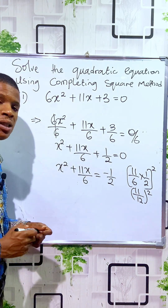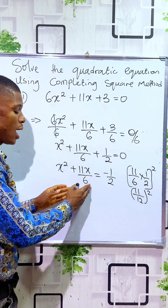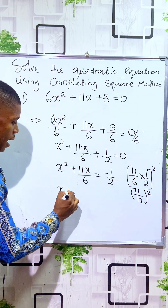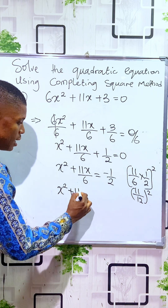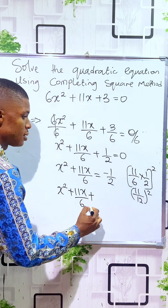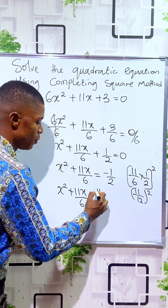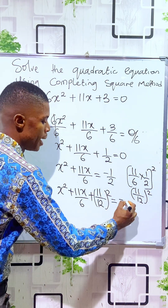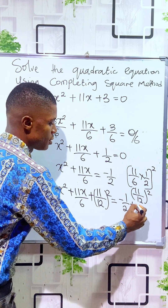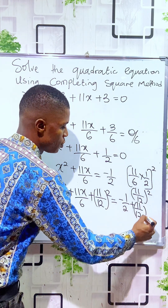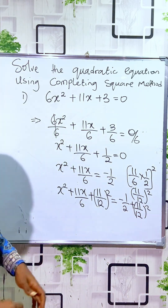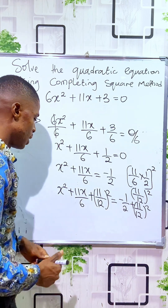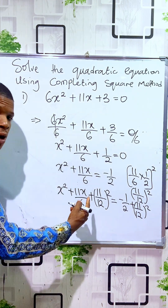Since we've gotten this value, we have to add it to both the left-hand side and the right-hand side. So we have x² plus 11x/6 plus (11/12)² equals minus 1/2 plus (11/12)². Observe that the left-hand side is now a perfect quadratic expression, and you can see that factorizing it is simple.